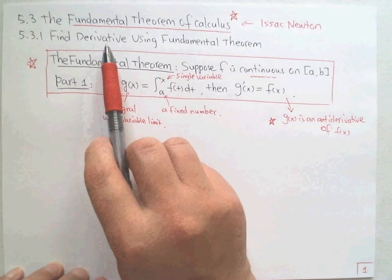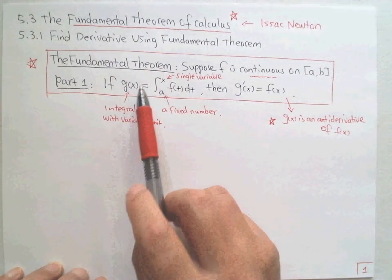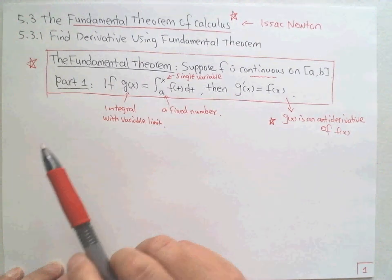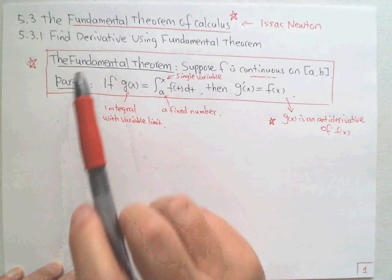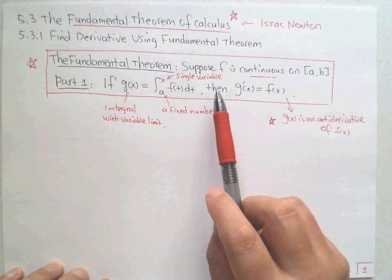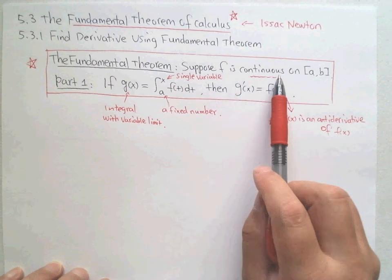Here's a summary of what Part One of the Fundamental Theorem states. First, we suppose f is a continuous function on [a, b].